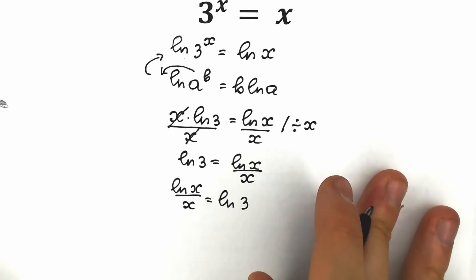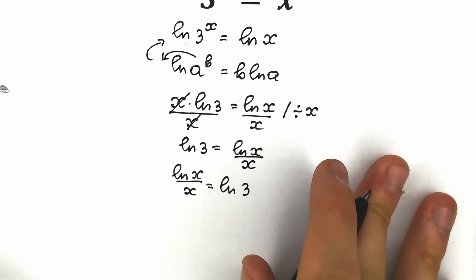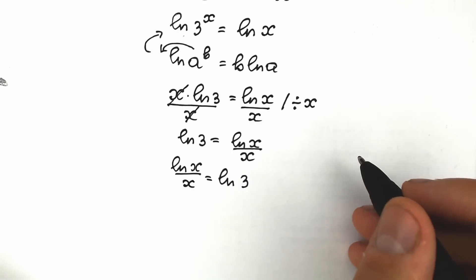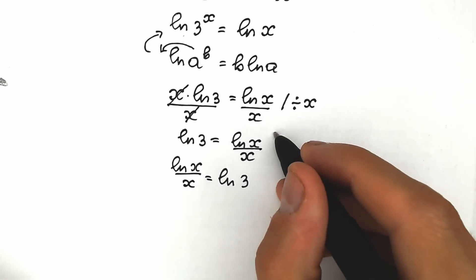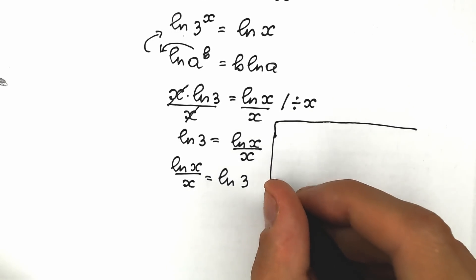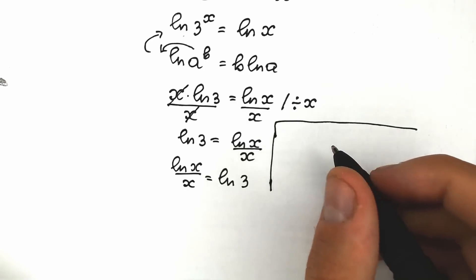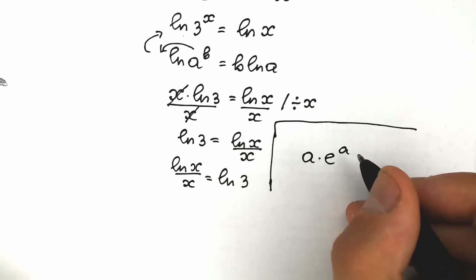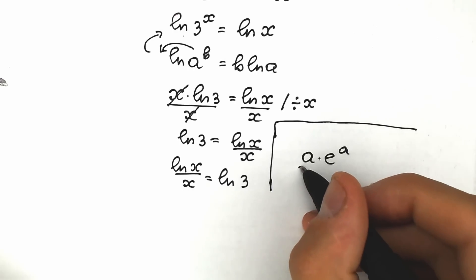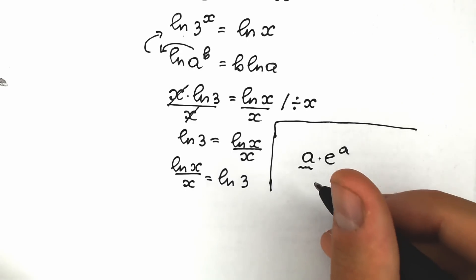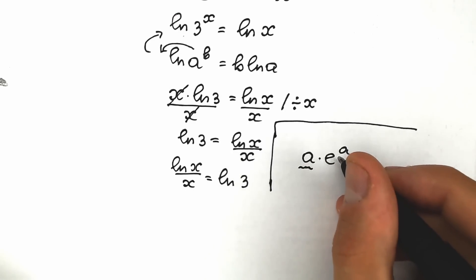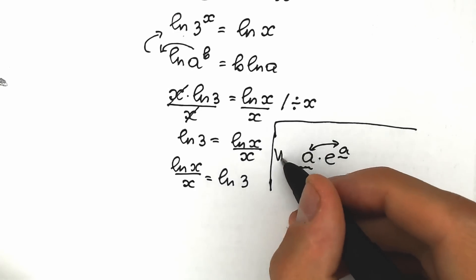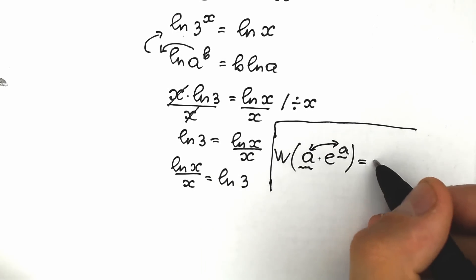Right now a lot of students need to know about the Lambert W function, because this function will help us a lot. So: if we have an expression like a times e to the power a — where a is whatever expression you want — and we apply the Lambert W function to it, the result is simply a. We need to create this form on the left side.